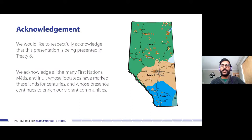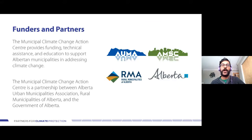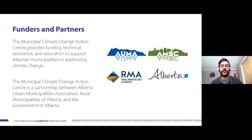I'd like to start by acknowledging that this presentation is being presented from Treaty 6 territory. This land is a traditional meeting ground, gathering place, and traveling route to the Cree, Soto, Blackfoot, Métis, Dene, and Nakota Sioux. We acknowledge all the many First Nations, Métis, and Inuit whose footsteps have marked these lands for centuries. The Action Center provides funding, technical assistance, and education to support Alberta municipalities in addressing climate change — a partnership between the Alberta Urban Municipalities Association, the Rural Municipalities of Alberta, and the Government of Alberta.